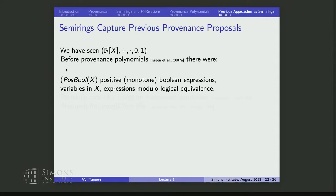There was a lot of work in probabilistic databases. The step-by-step approach, when you cannot do shortcuts, is to first compute a boolean provenance — for every tuple, get a boolean expression that captures its provenance. For positive queries, positive relational algebra, these are monotone boolean expressions with variables from X corresponding to the input tuples.